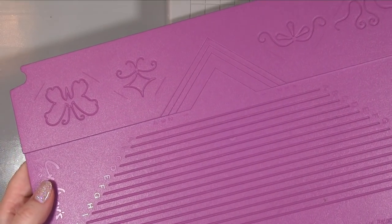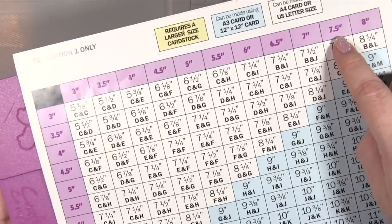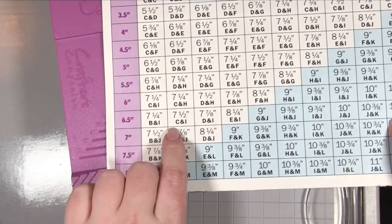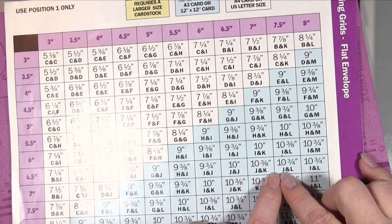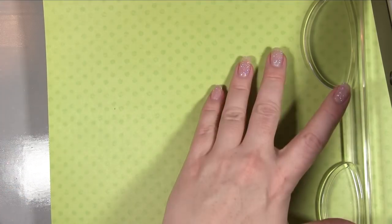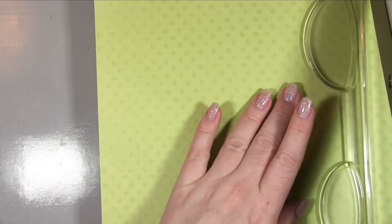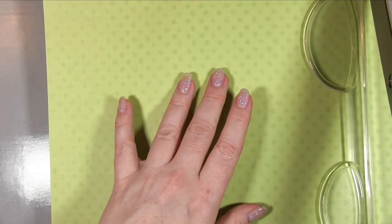Taking the leaflet that goes with the board, you go to the page for a flat envelope and look across the table at six and a half and then down for seven and a half. You'll come to a square that tells you you need a piece of paper that is ten and three quarters inches square. So I took a piece of twelve by twelve in this lovely green and I am cutting that to ten and three quarters on each side.